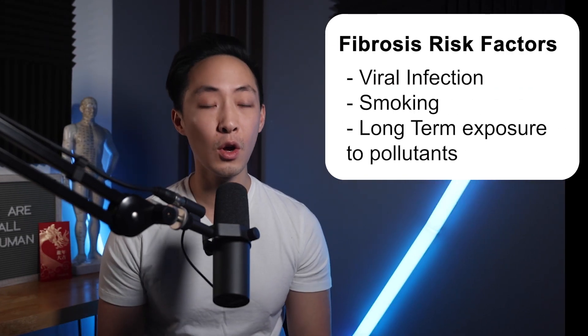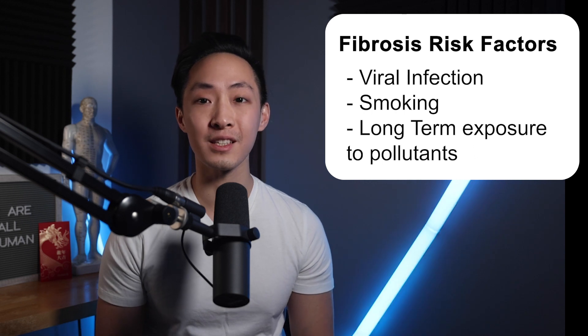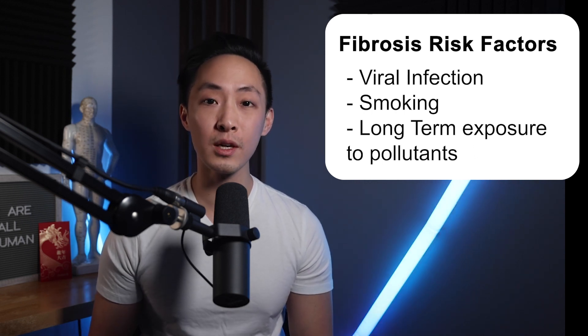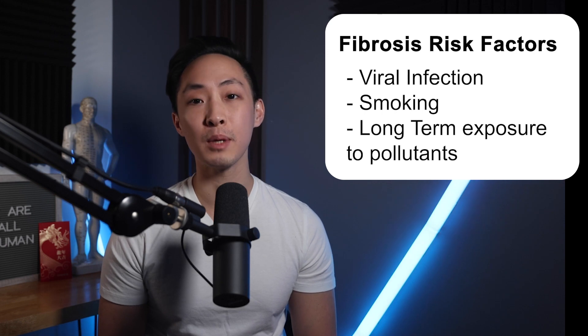Why does idiopathic pulmonary fibrosis happen? Well, the answer is that we're not really sure — that's what idiopathic means: unknown cause. We know there are some things linked to fibrosis, like viral infection, smoking, or long-term exposure to dust, especially metal dust or wood dust. For example, people who work construction jobs, building skyscrapers and houses, may have long-term effects from inhaling that metal or wood dust, which could be linked to pulmonary fibrosis in the long run.